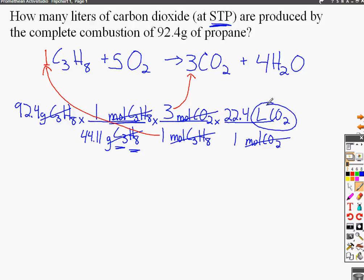So now all that's left to do is punch this into the calculator. And I'm going to obtain 141 liters of carbon dioxide. I want to have three significant figures because I had three sig figs in the question, so I'm going to have three sig figs in my answer.